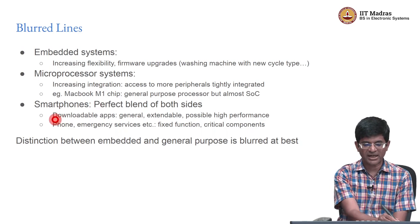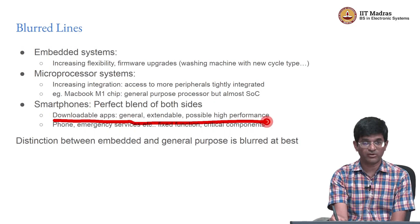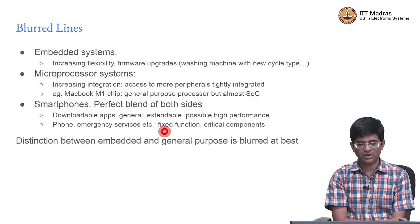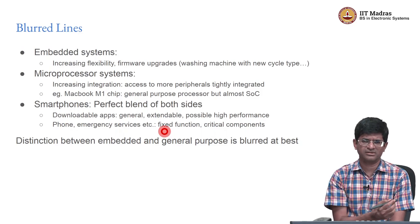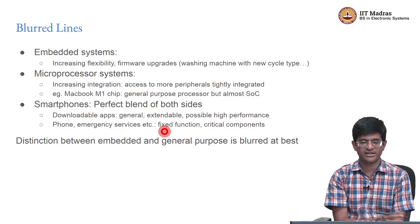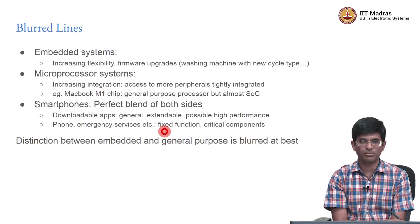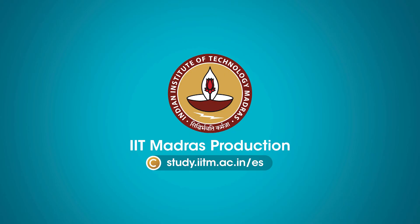Smartphones are actually a perfect blend — they are exactly on the borderline between both of these and are primarily responsible for blurring these differences. They offer the expandability of downloadable apps and potentially high performance computation, alongside fixed functionality like phone calls and emergency services communication. The distinction between embedded and general purpose devices is blurred at best. What matters is what you are trying to achieve: if the functionality requires specific kinds of fixed functionality or resource optimization, what are the kinds of tricks you can use to improve upon that? That is the more important part rather than what it is called.